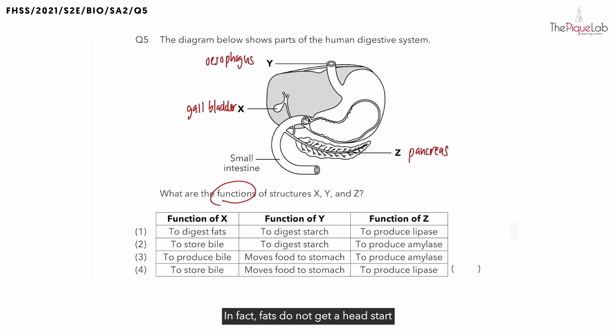Fat digestion starts in the small intestines. In fact, fats do not get a head start like starch and protein. So where does starch and protein digestion begin? Starch digestion begins in the mouth, while protein digestion begins in the stomach.